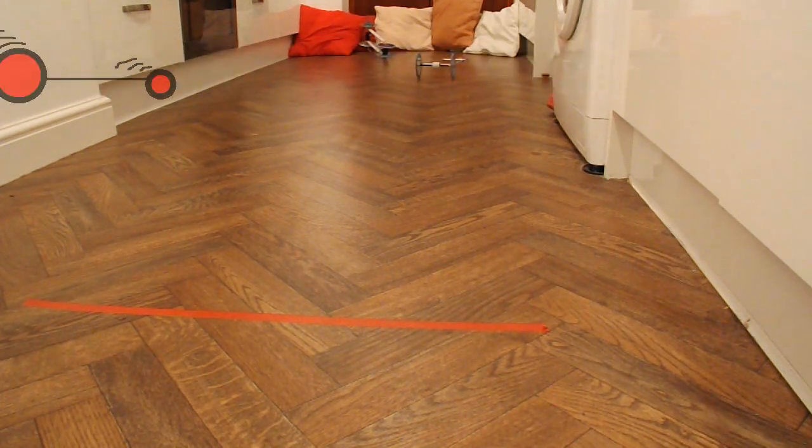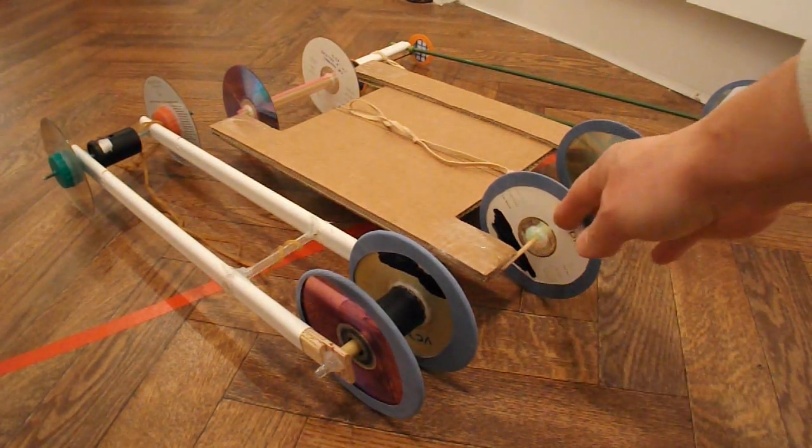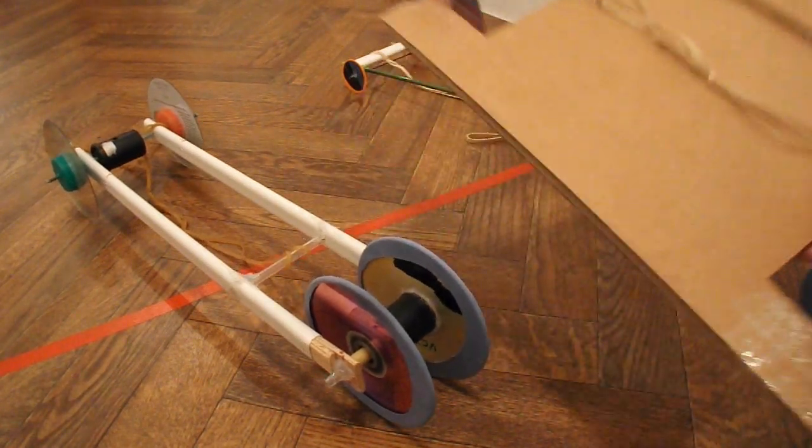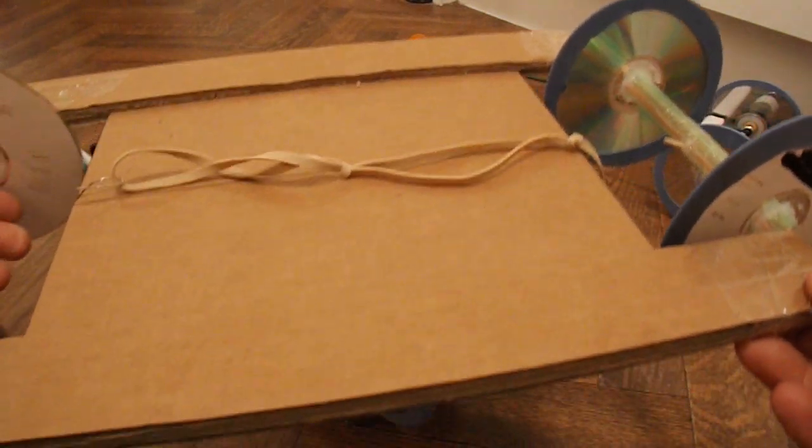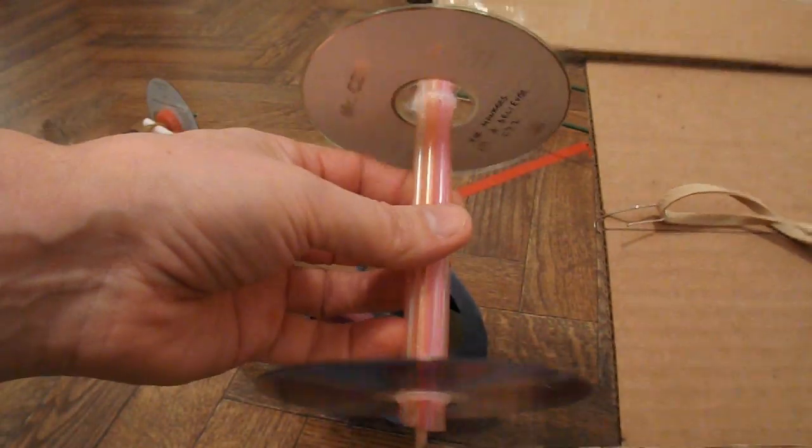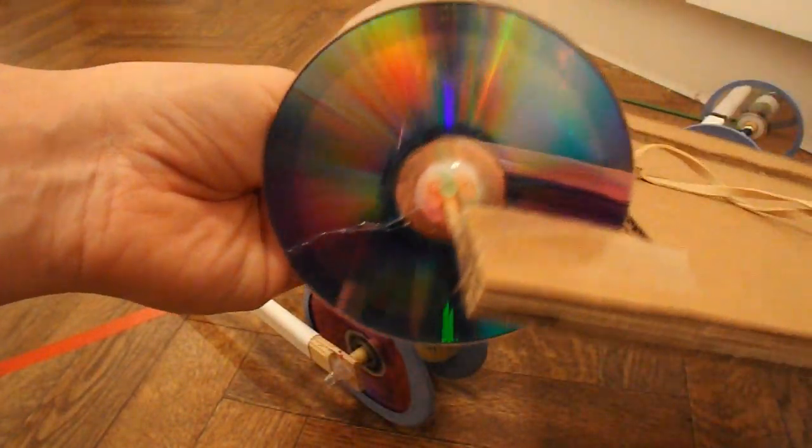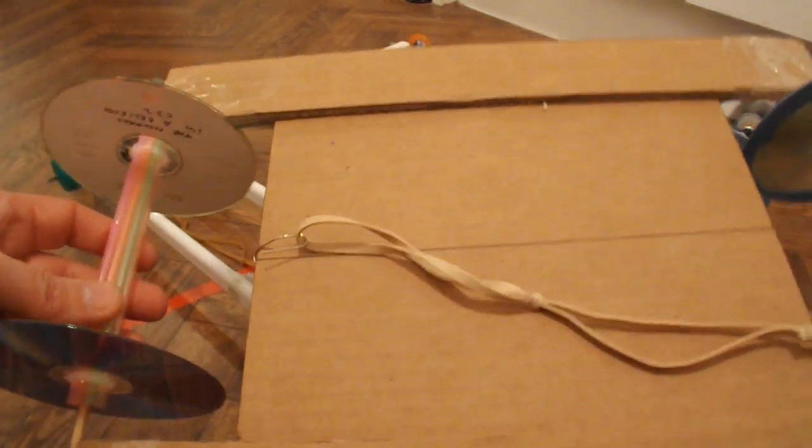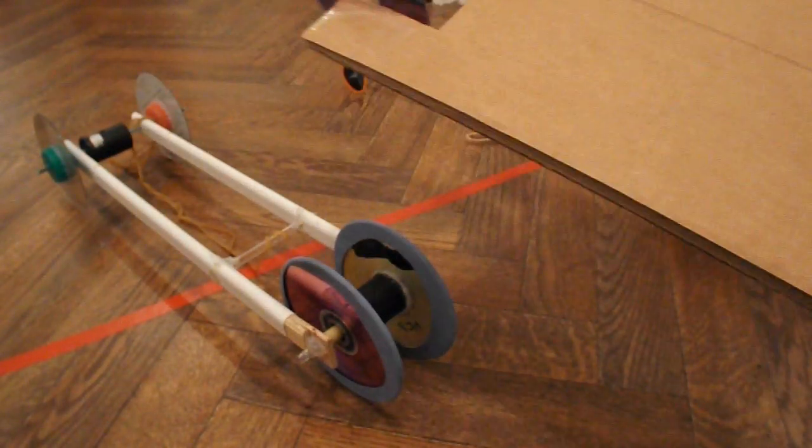Summary time. Rubber band powered car number four was never designed to go fast. It was just designed to be an easy car to make with just drinking straws and barbecue skewers for the axles, cardboard body, sticky tape holding it together. So nice easy car to build, and it didn't do bad.